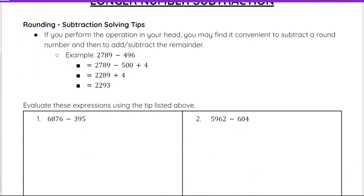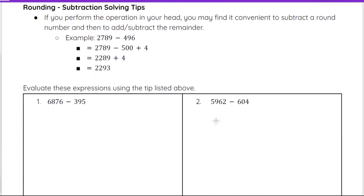So if you perform subtraction operations in your head, you may find it convenient to subtract a round number that's a little easier to work with, and then add or subtract the remainder. So for example here, if we're doing 2789 minus 496 in our head, it's probably easier to think of 496 as 500 instead. But if I subtract 500, I'm subtracting an extra 4, so I need to add 4 in the end to balance it out.